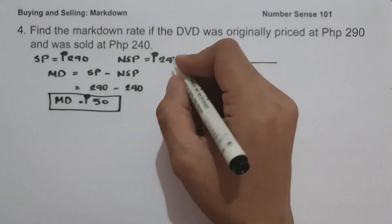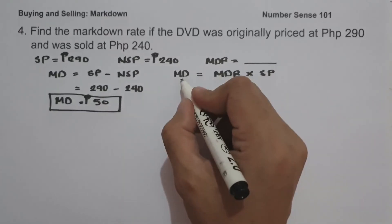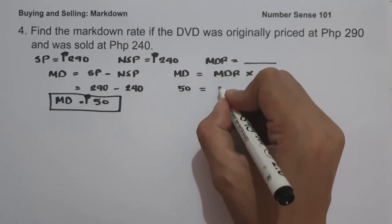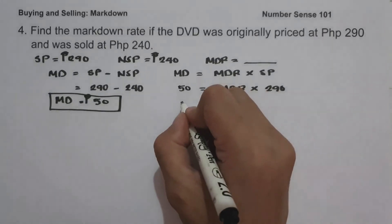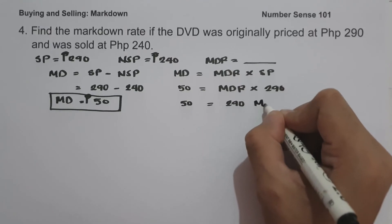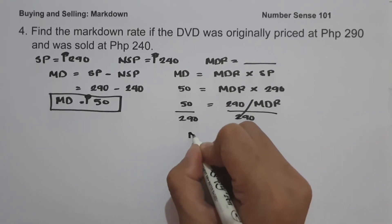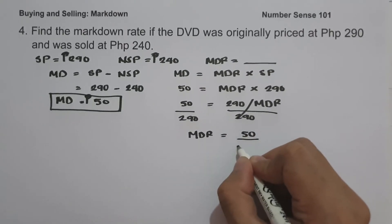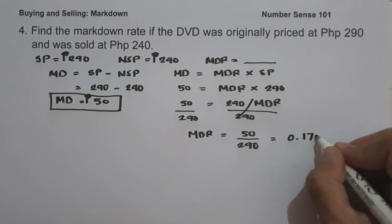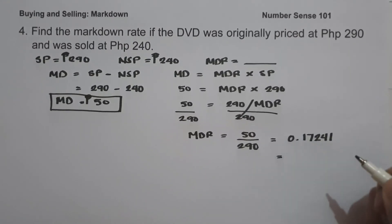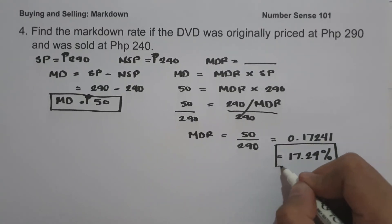Using the formula markdown equals markdown rate multiplied by selling price, we have 50 equals markdown rate times 290. To simplify, 50 equals 290 times the markdown rate. Dividing both sides by 290, markdown rate equals 50 divided by 290, which gives us 0.17241. Simplified, this is 17.24%, and this will be the markdown rate and our answer.